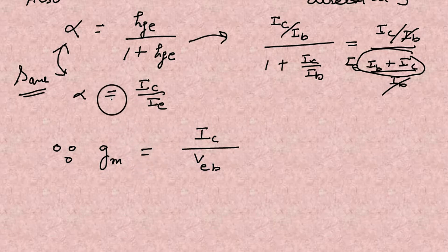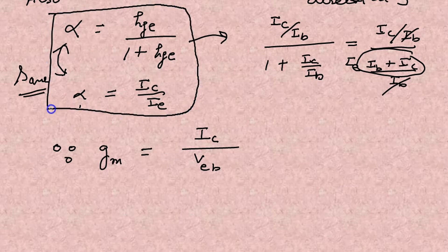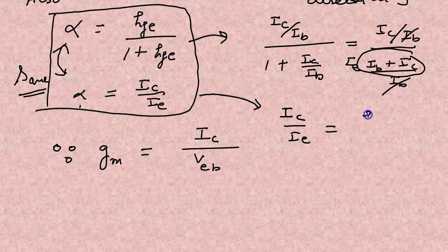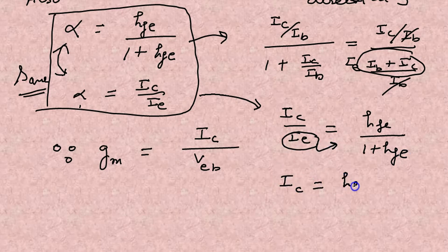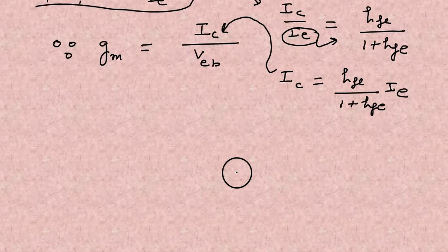And where GM was equals to IC over VEB, we know well, definition of the transconductance. So equating these two values together. So I have taken to this side. So one thing is missing, I think there should be a negative sign.